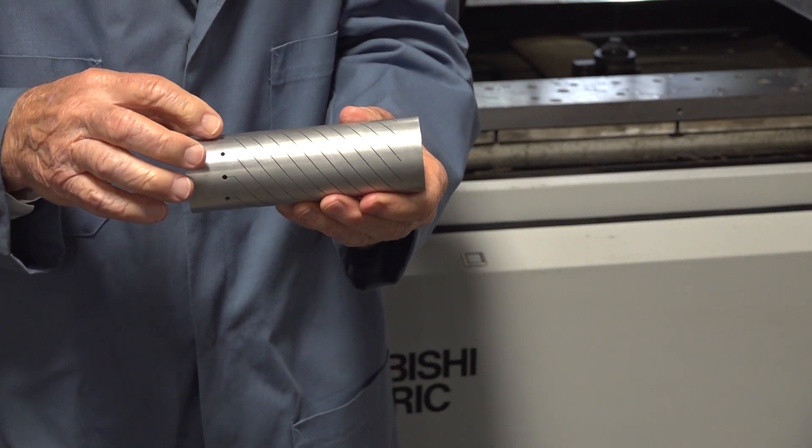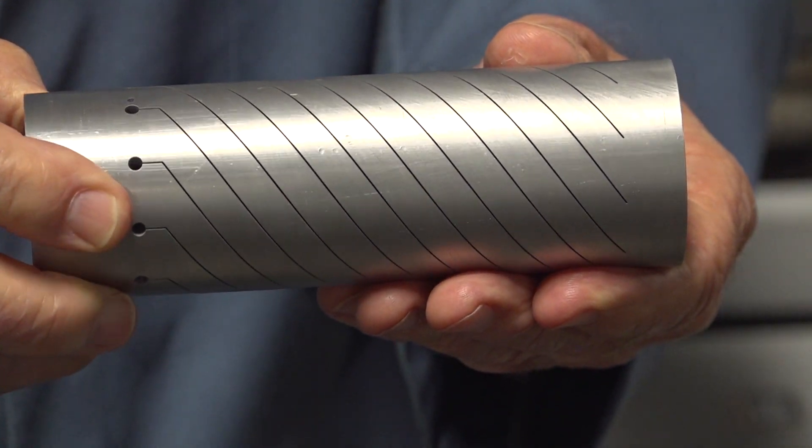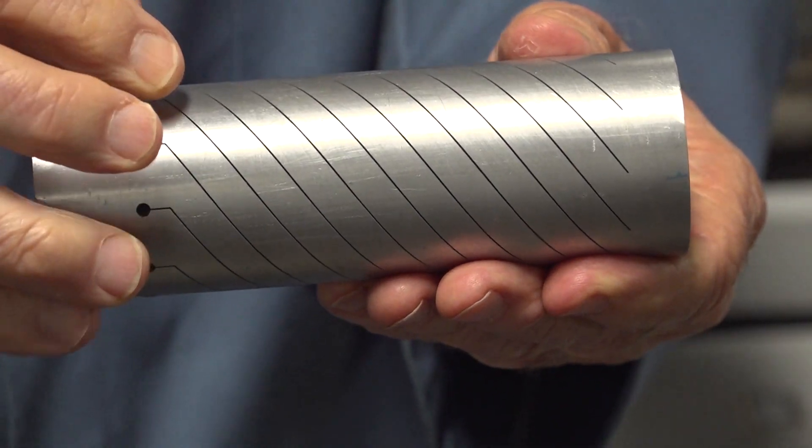Now this chuck, to make this part, all these cuts in here, as you can see, turns very slowly while the machine moves in the X direction.